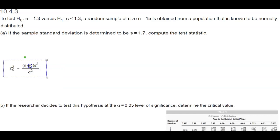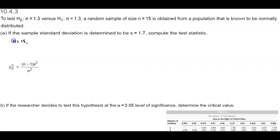Let's first take a look at the formula for the test statistic. We need the sample size, the sample standard deviation, and the population standard deviation. So let's write down the information that's given. We know that n is equal to 15, the population standard deviation is equal to 1.3, and the sample standard deviation is equal to 1.7.